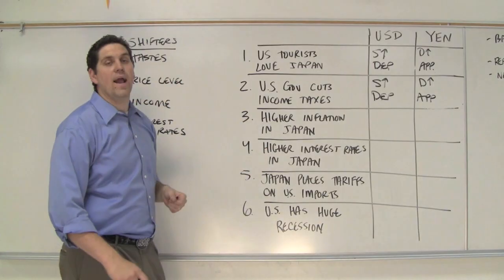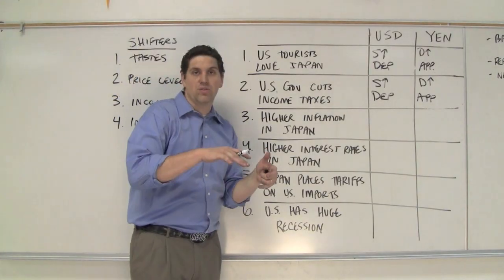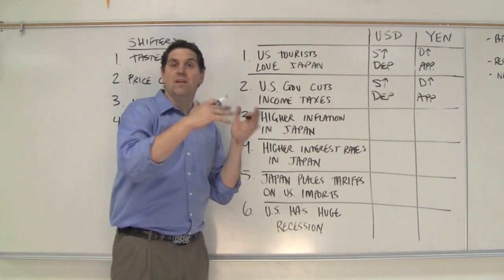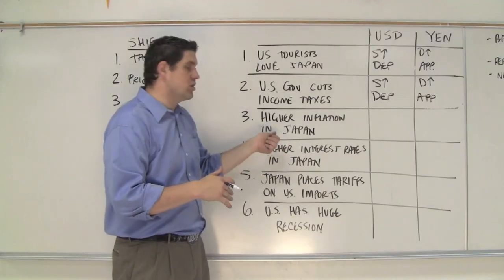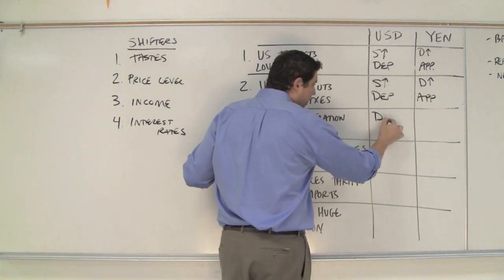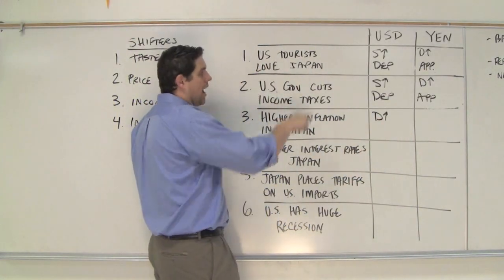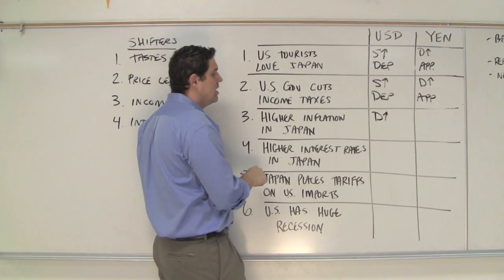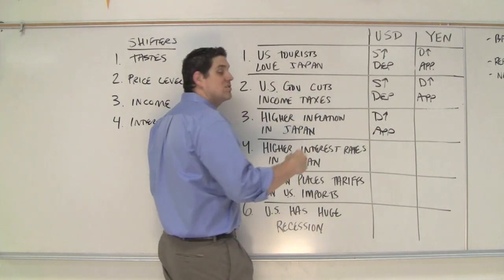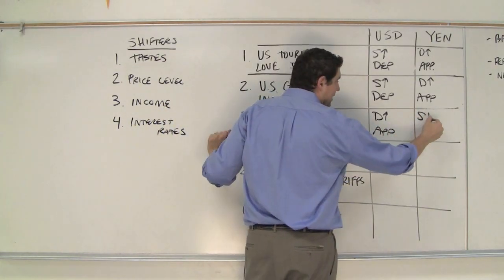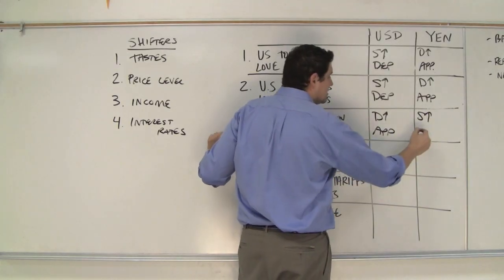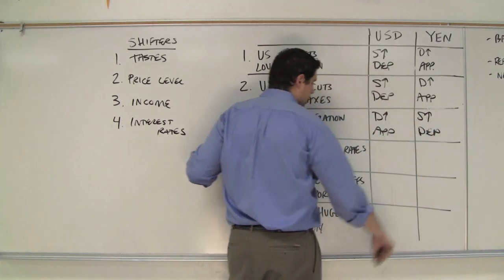If Japan has higher inflation, and they can buy things in their own country or they can buy things from the United States, they'd rather buy things from the United States where inflation is lower. And so the Japanese are going to demand more United States dollars. So the dollar will appreciate. But they have to supply more of their Japanese yen to get it, so the supply of yen increases, and that causes the yen to depreciate.